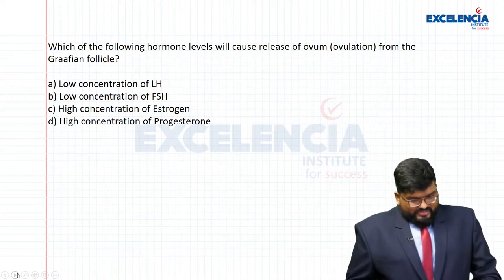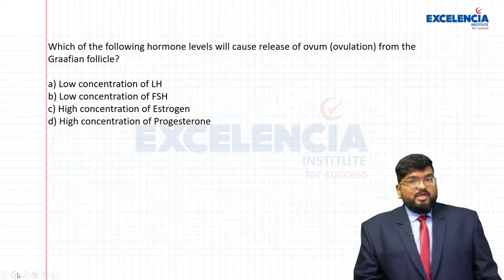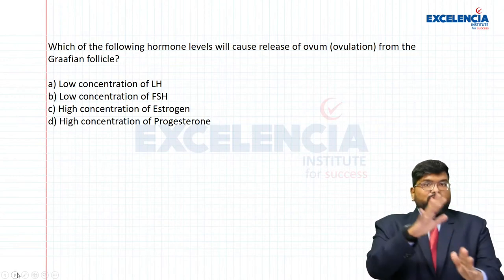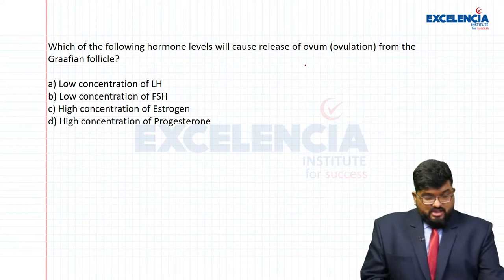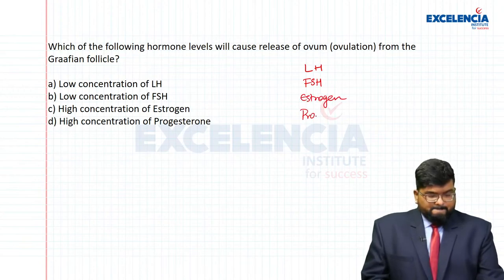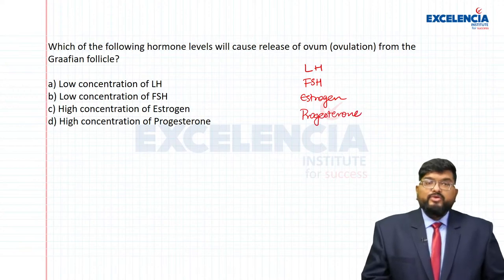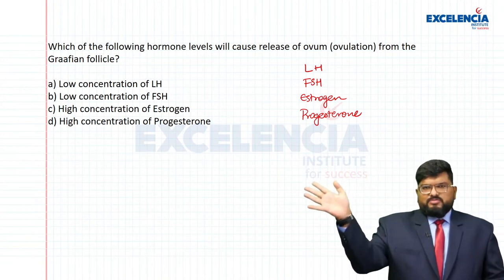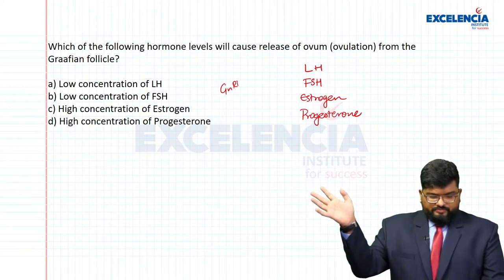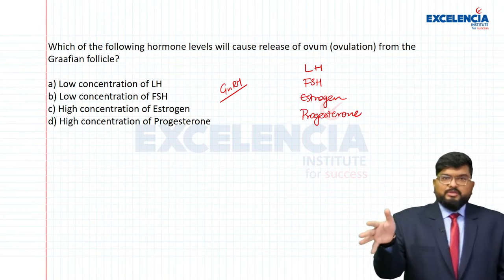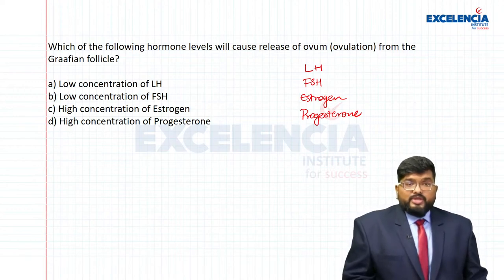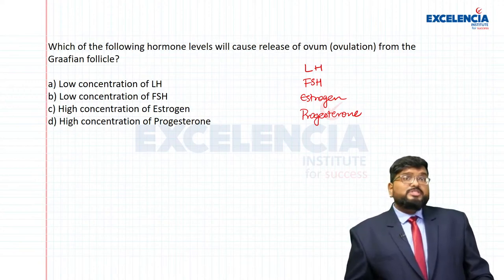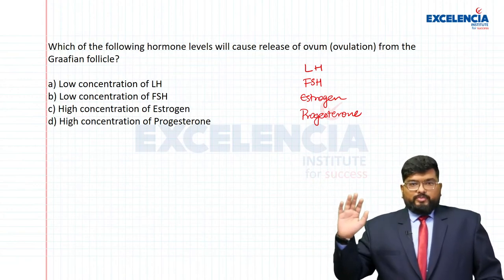Which hormone level will cause release of ovum from the Graafian follicle? Hormones driving the menstrual cycle are LH, FSH, estrogen, progesterone, and GnRH. LH is responsible for rupturing the Graafian follicle, causing ovulation, and converting the remnant follicle into corpus luteum. Low LH is not helpful. Low FSH is not helpful — FSH acts during the follicular phase, stimulating follicle development and estrogen release, which thickens the endometrium.